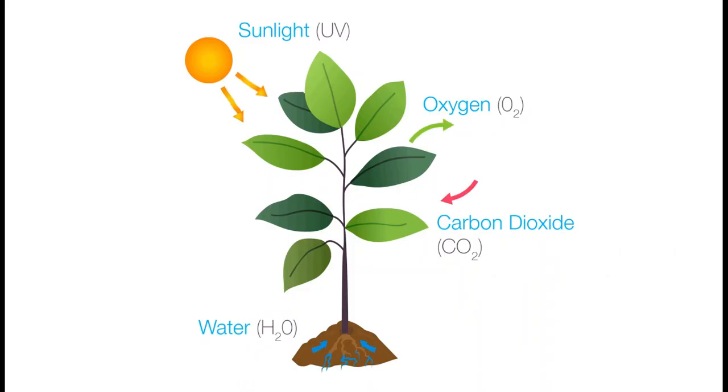This energy is then used to combine carbon atoms from carbon dioxide and hydrogen atoms from water into the carbohydrate glucose. Green plants produce carbohydrates through this process.